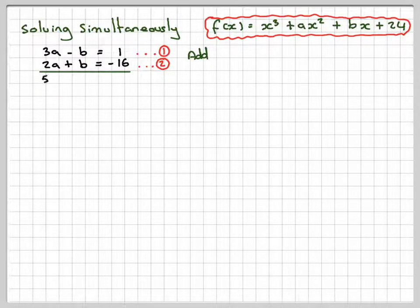We're going to get 3a + 2a is 5a. -b + b is nothing. 1 - 16 is -15. Dividing through by 5, we get a = -3.